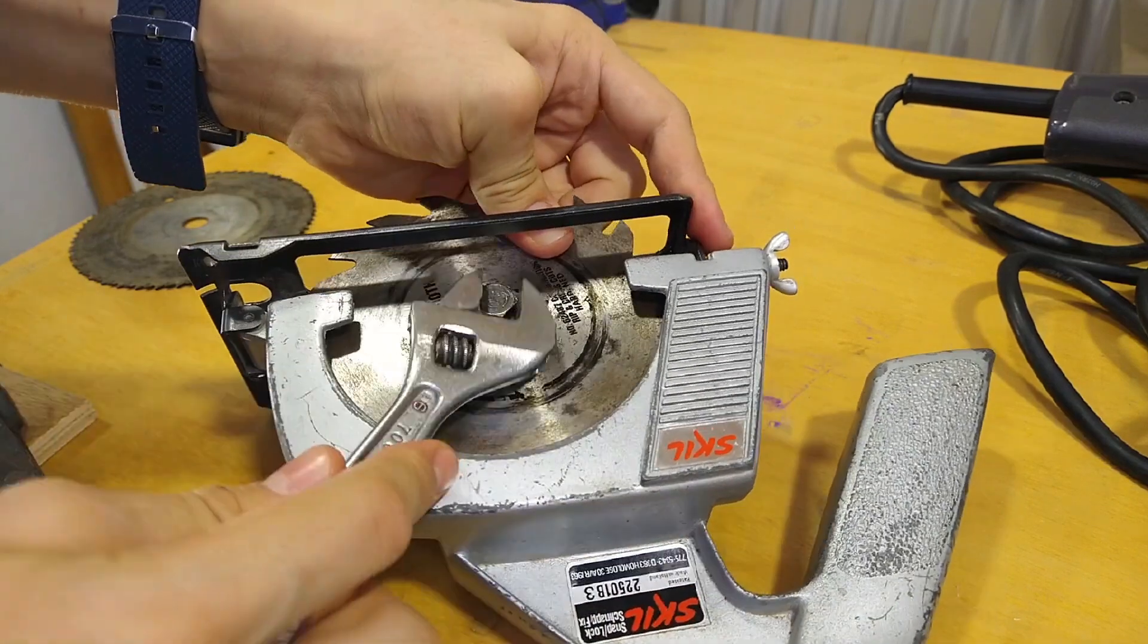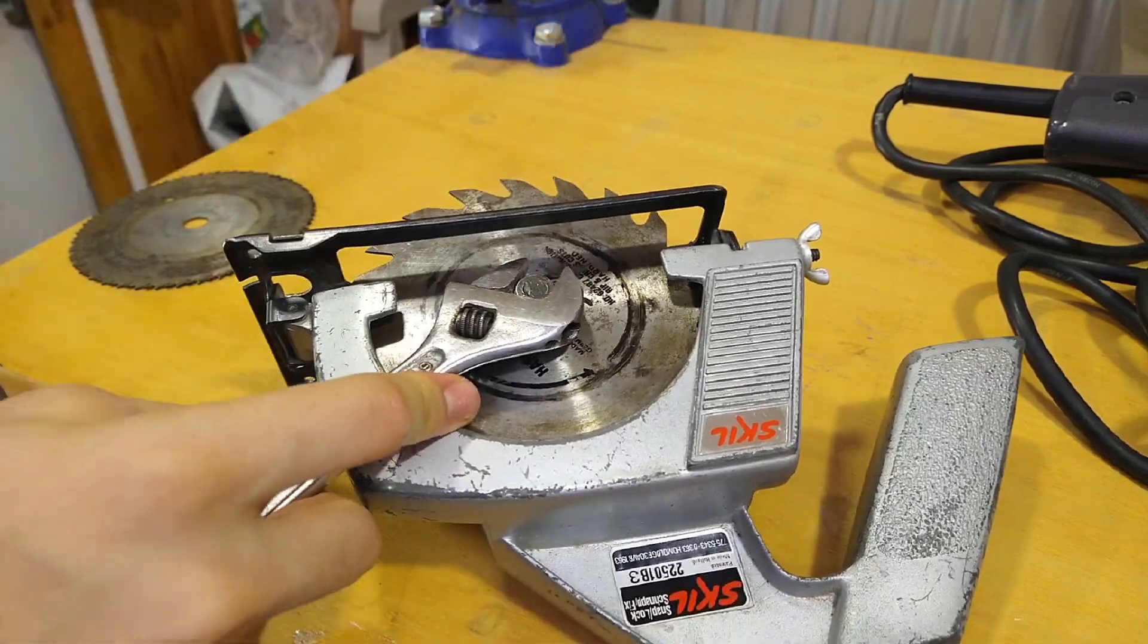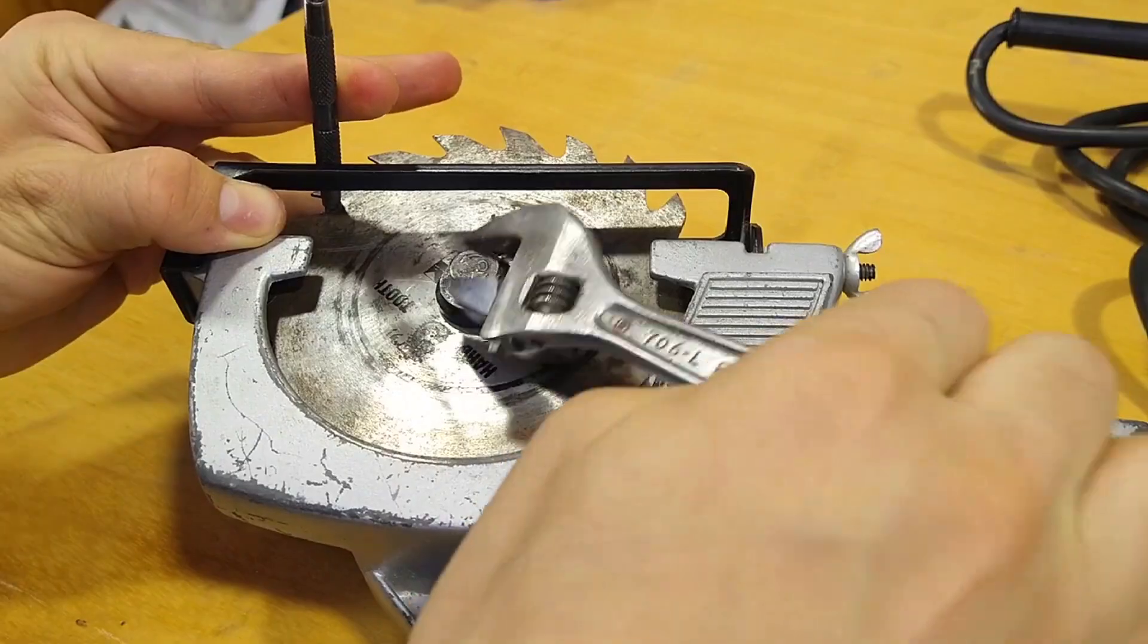If your saw doesn't have a blade stop, as was the case with my drill-powered circular saw, replacing the blade can be a challenge, but not anymore.